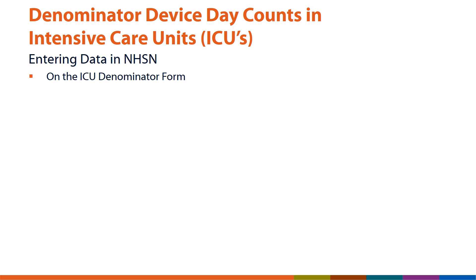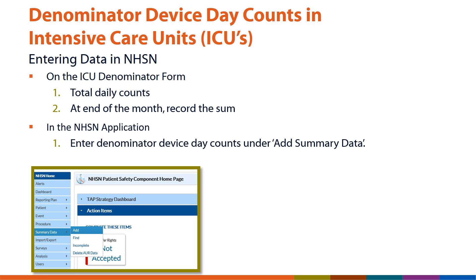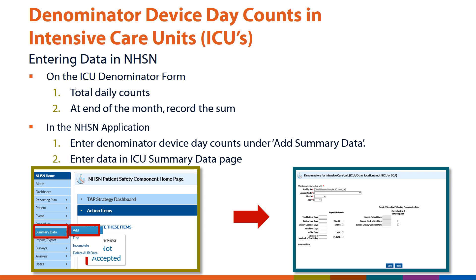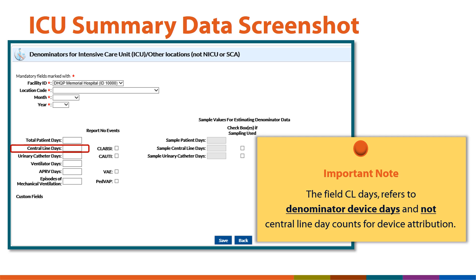When entering summary data on the ICU denominator form, total the daily counts. At the end of the month, record the sum. When entering summary data in the NHSN application, enter denominator device day counts under the option to add summary data, then enter in the data in the ICU summary data page. Denominator device day counts for central lines are recorded in the field 'central line days.' It is important to note that this field is referring to denominator device days and not central line day counts for device attribution.